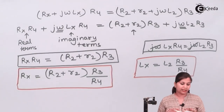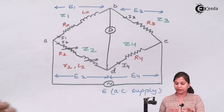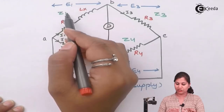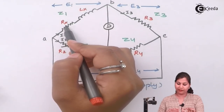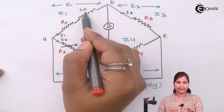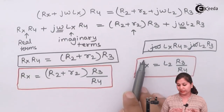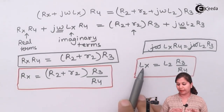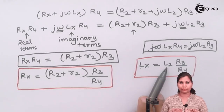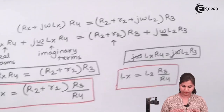You can see that in the circuit diagram, we wanted to find out Z1, the unknown impedance which is Rx and Lx. We have found out the value of both Rx and Lx. This unknown inductance can be calculated by comparing it with a known inductance L2. This is how we use the Maxwell inductance bridge for the measurement of self-inductance.